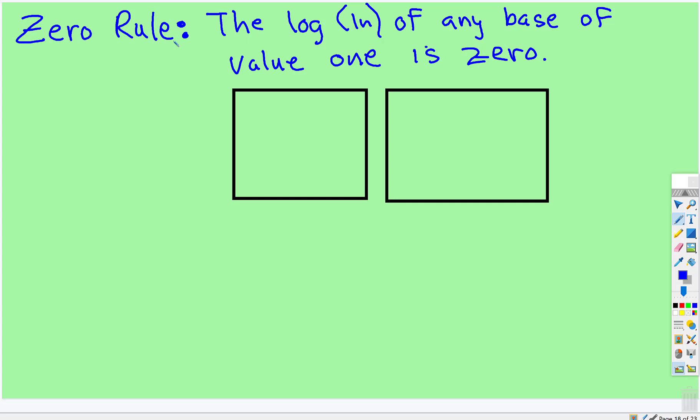For any log expression, whether it's log base 10 or natural log with any base, it could be log base 10 or log base 85, anything. For natural log, the base is always e. So regardless of the base, the log of one is zero.